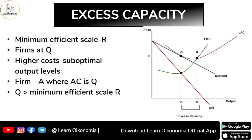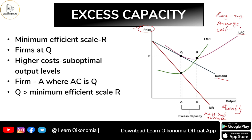For the graphical explanation of excess capacity, take quantity or output along the x-axis and price along the y-axis. Draw a downward sloping demand curve and your MR (marginal revenue) curve. Then draw the typical U-shaped LAC (long-run average cost) curve, which is U-shaped due to returns to scale.